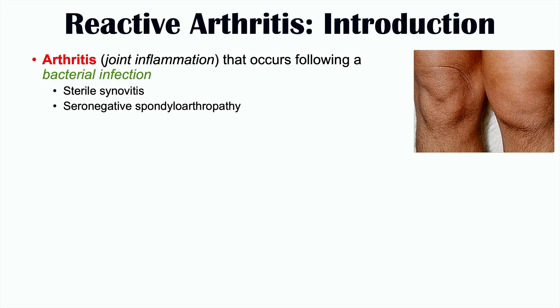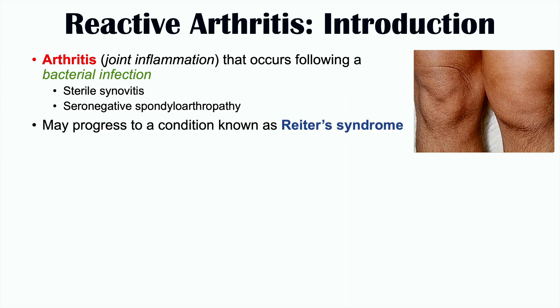Reactive arthritis is one of the seronegative spondyloarthropathies, and it may progress to a condition known as Reiter's Syndrome, which we'll discuss in more detail later. Reactive arthritis occurs one to three weeks after the initial infection. So when a patient has been infected with particular bacteria, one to three weeks later they can develop this type of arthritis.